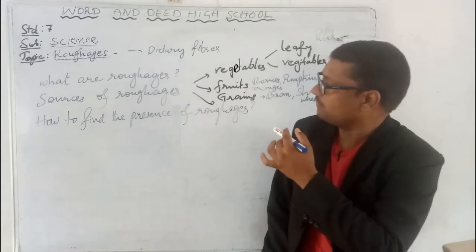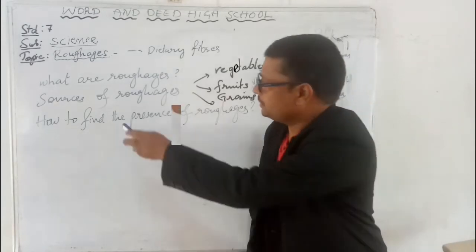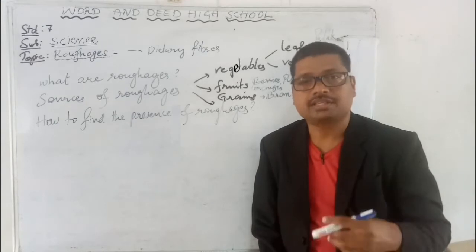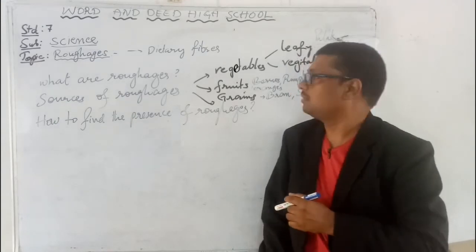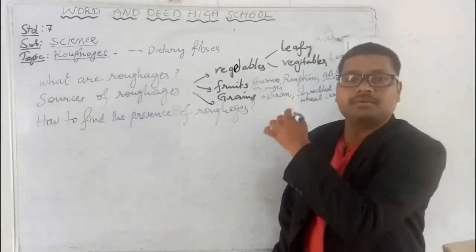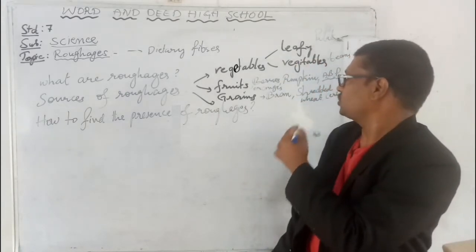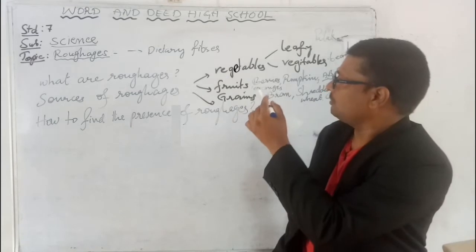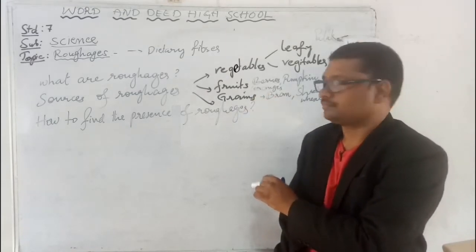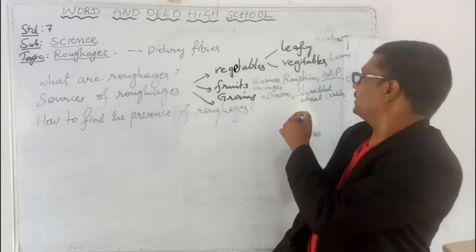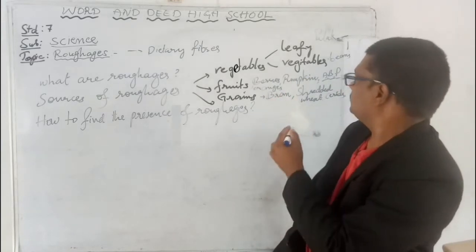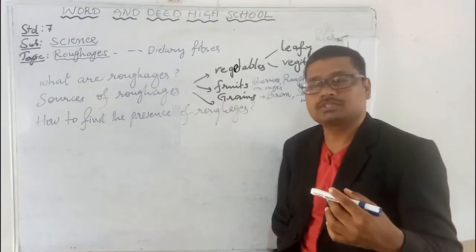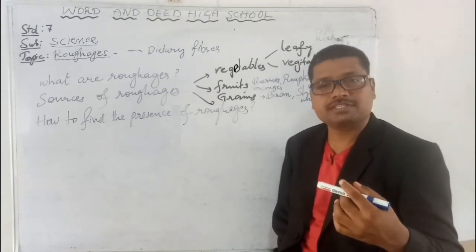Now let us talk about sources of roughage. Roughage is available in vegetables, fruits, and some grains like bran, shredded wheat, and cereals. Roughage is also available in fruits such as berries, pumpkin, oranges, apples, banana, and papaya. So roughage is available in various different types of fruits.